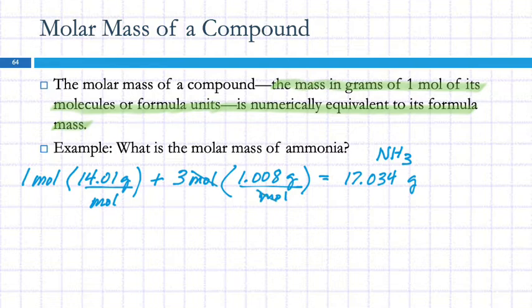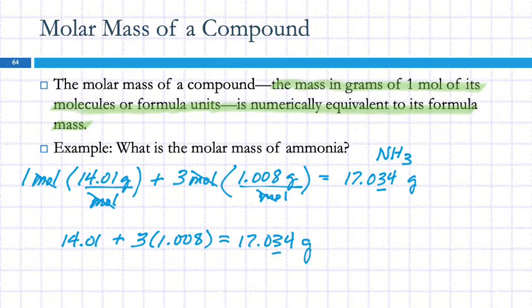17.034 grams. So the moles cancel out. And if we're looking at significant figures, we should probably say that's the last one. So you do not need to write out all those units. This is the minimum I would like to see you write out when you calculate molar masses. You can leave the units out. We're going to do a lot of these calculations. And if we put units in them all the time, it gets extremely tedious.